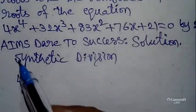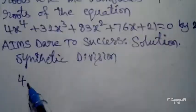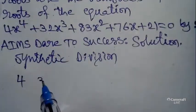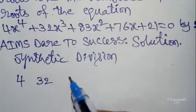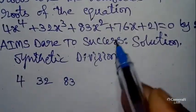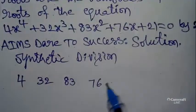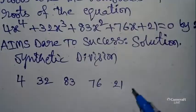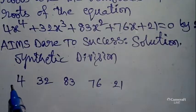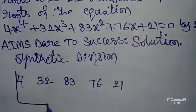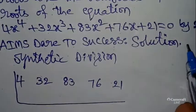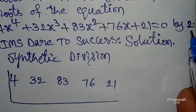First of all, you can write coefficients from the given equation: x⁴ coefficient is 4, x³ coefficient is 32, x² coefficient is 83, x coefficient is 76, constant is 21. Take a box like this. What is the given value? By 2. So take the opposite symbol: minus 2, write here.